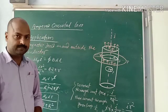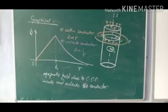Here is a graphical representation of the magnetic field inside, on the surface of, and outside the conductor. Inside the conductor on the axis, the magnetic field is zero, and it is maximum on the surface. Going away from the conductor, it gradually decreases. Inside, B is directly proportional to r; outside, B is inversely proportional to r. So the magnetic field is maximum on the surface and decreases to zero far away. Thanks for watching!